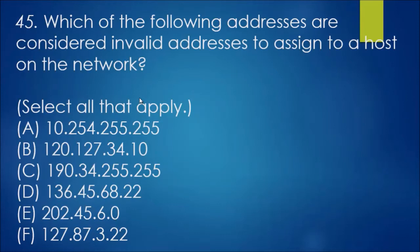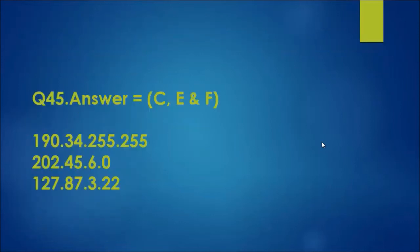For number 45, which of the following addresses are considered invalid addresses to assign to a host on the network, select all that apply. I'll read out the answers and do my explanation. The answers are C, E, and F. Essentially, you cannot assign an IP address to any system that has all host bits set to ones or all host bits set to zero, and you cannot have an IP address where the first octet is 127 because that's actually reserved for loopback purposes. Basically these are right in the middle of assignments of classes and therefore makes them incompatible.